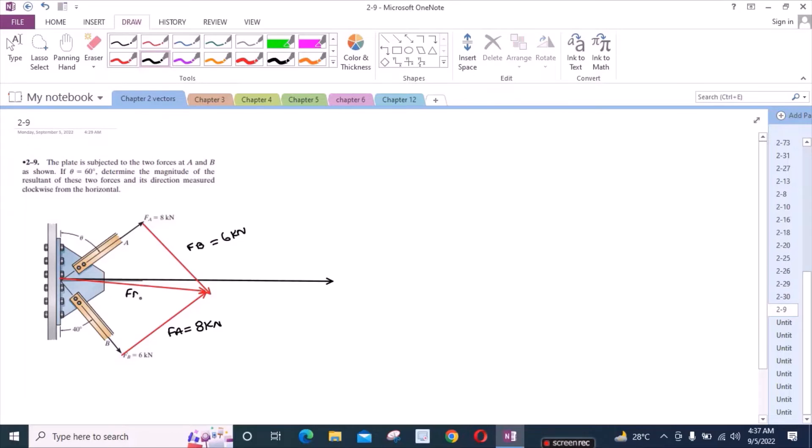This is FR and we have to find the resultant. Let's say this is the x-axis, and theta equals 60 degrees which is given to us in the problem. This means this angle right here is 30 degrees because the y-axis is perpendicular to the x-axis. Similarly, on this hand, this is 40 degrees which means this angle right here is 50 degrees.